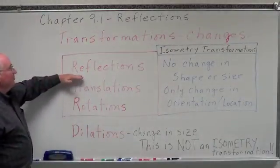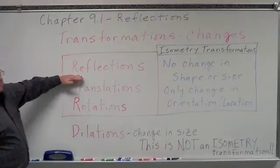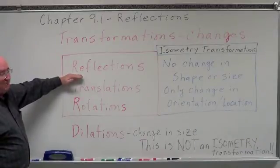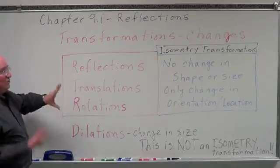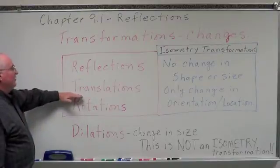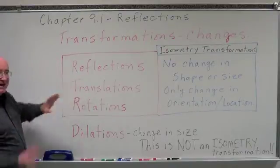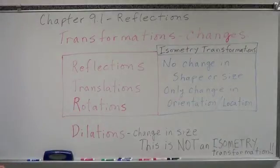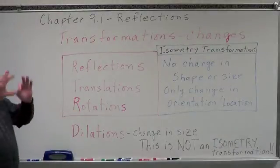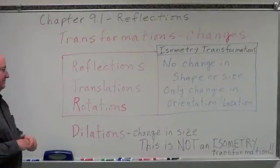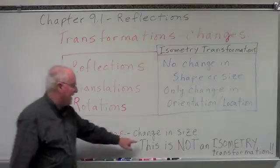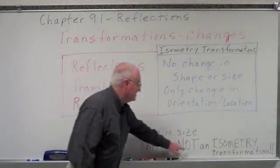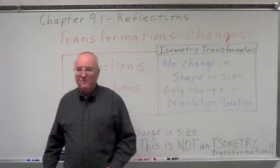The isometry transformations are reflections — we don't change the shape or the size, we just reflect it. Translations — we don't change the shape or the size, we're going to move it. Rotations — we don't change the shape or the size, we're just rotating it. Now dilations, we change the size — this is not an isometry transformation.